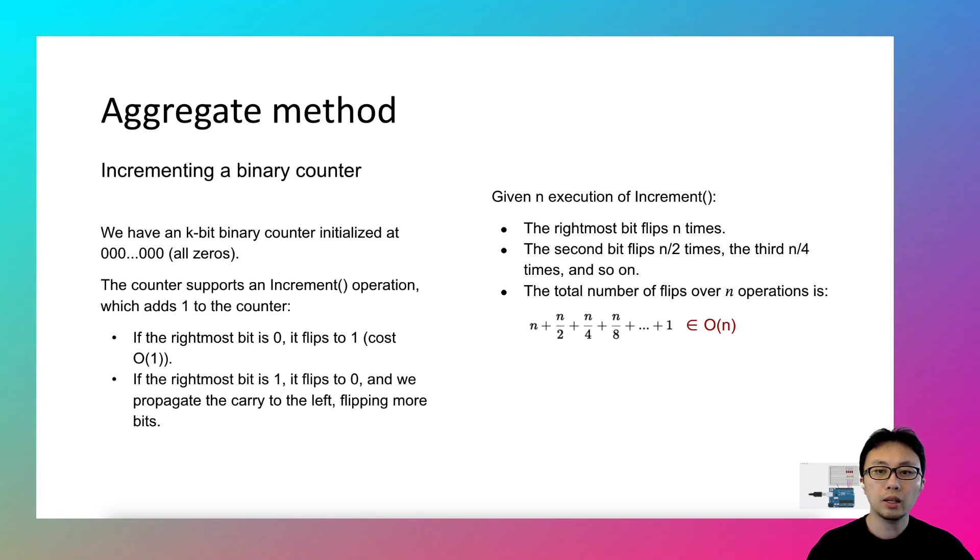As a result, we have the total cost of n operations. The second step is done. The third step is to divide the total cost by the operation numbers, which is n. That will lead to big O of 1.